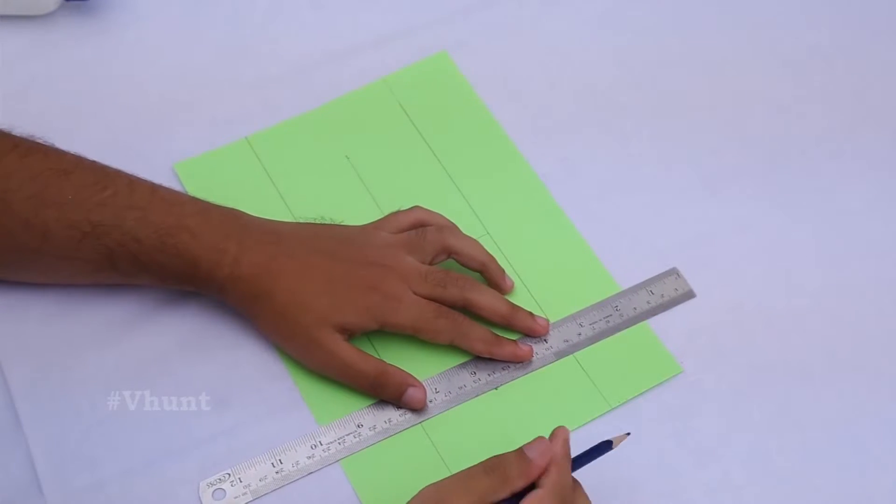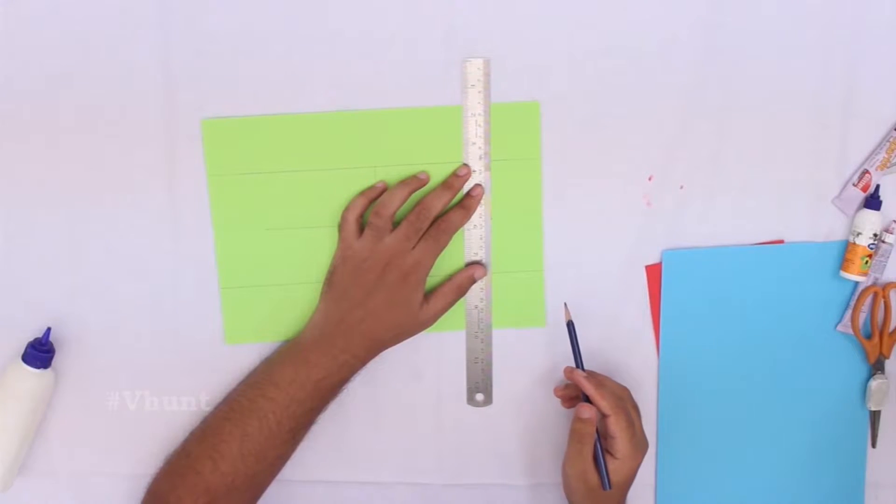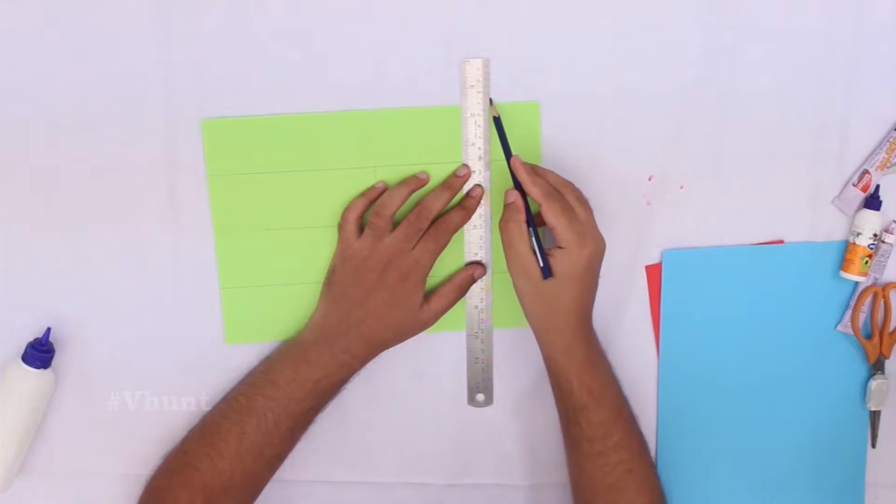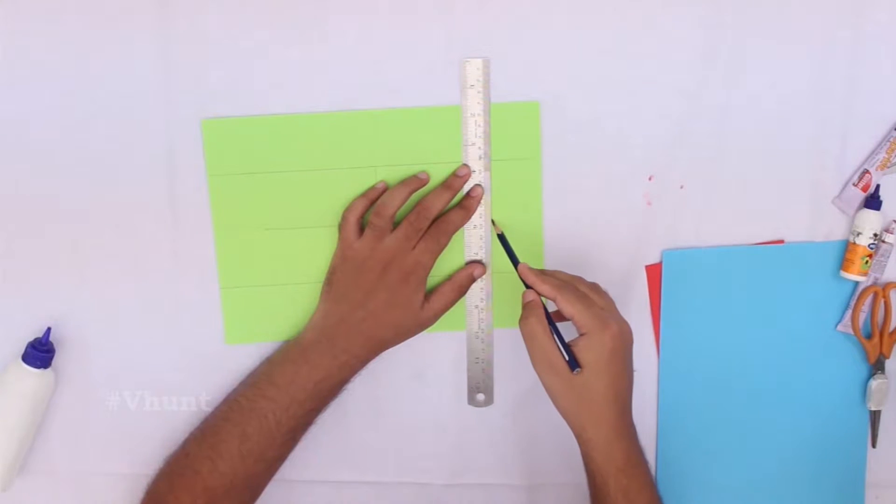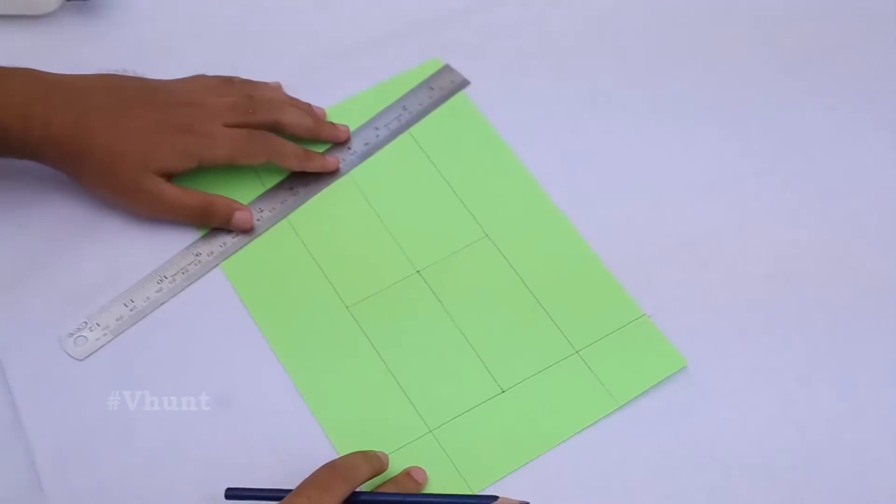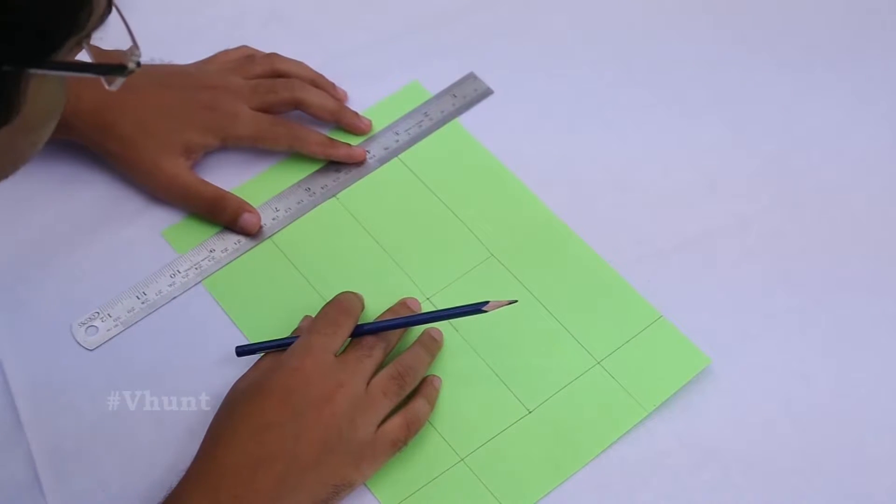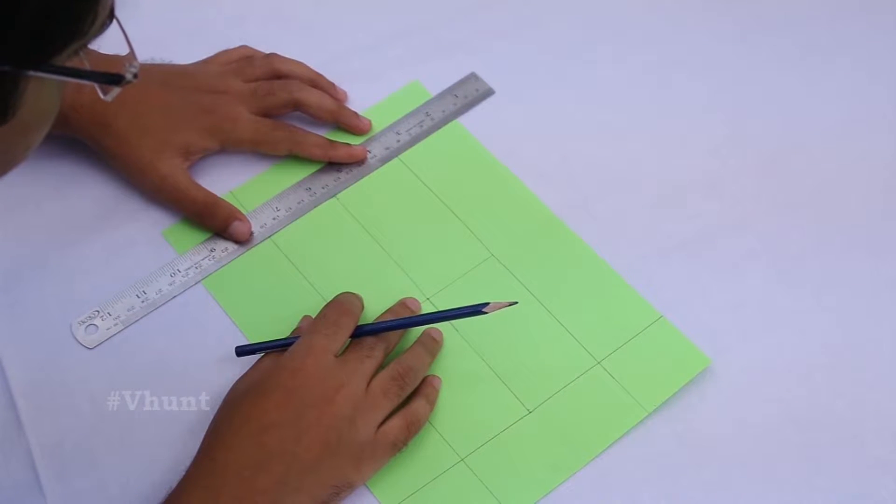Then from the right side end point of the 10.2 cm line, draw an accurate vertical line. Continue the same from the left 10.2 cm point.